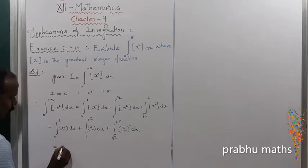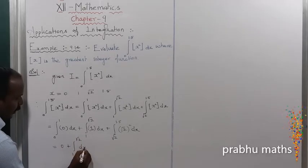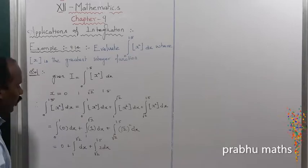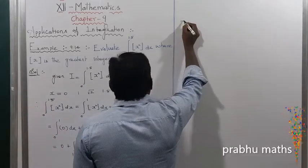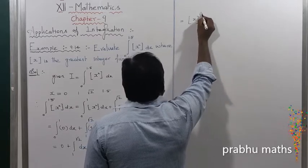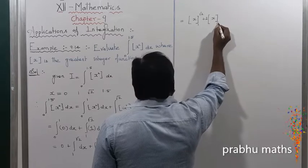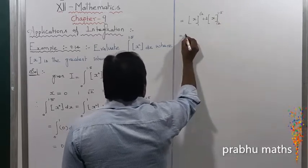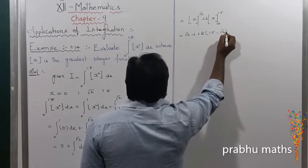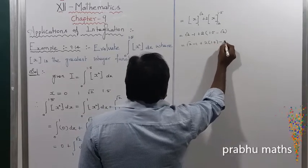The first integral is 0. Next, plus the integral from 1 to root 2 of dx, plus the integral from root 2 to 1.5 of 2 dx. Evaluating: that equals x from 1 to root 2, plus 2 times x from root 2 to 1.5. That gives root 2 minus 1, plus 2 times 1.5 minus 2 times root 2.